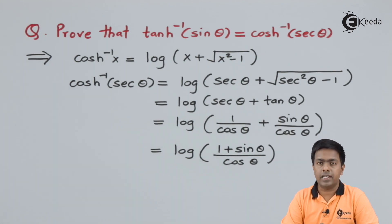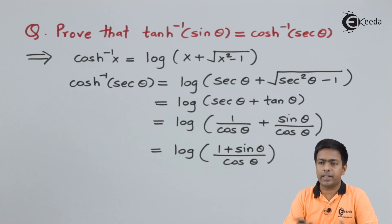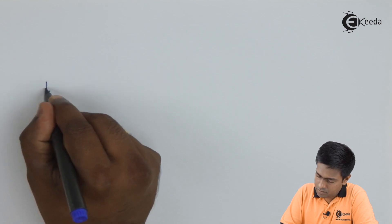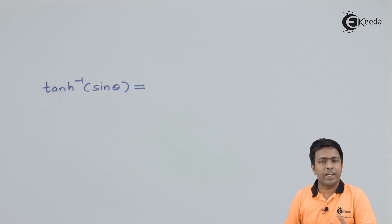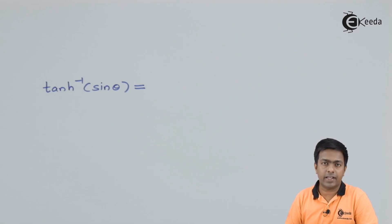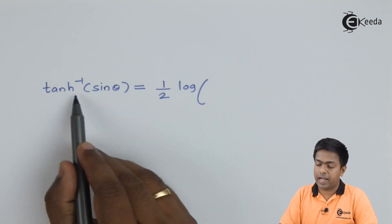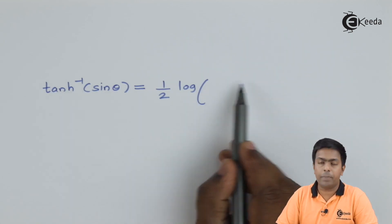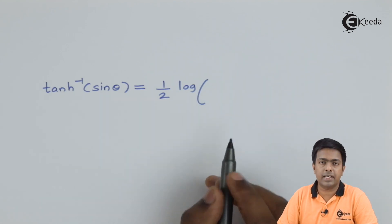On the left hand side we have tanh⁻¹(sin θ). We'll solve it and try to prove its value equals log[(1 + sin θ)/cos θ]. Using the formula of tanh⁻¹(x), we have ½ log[(1 + x)/(1 − x)]. The value of x is sin θ, so we get ½ log[(1 + sin θ)/(1 − sin θ)].